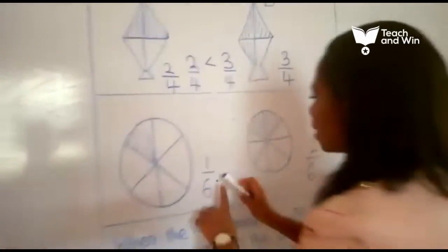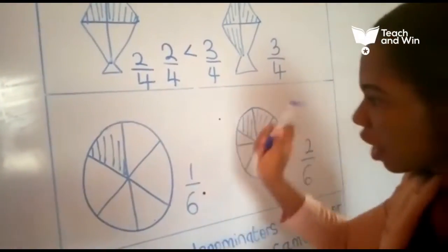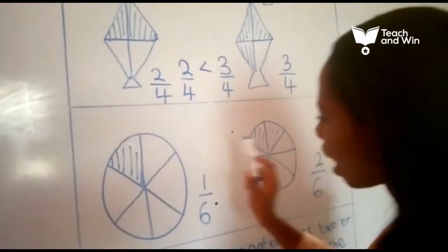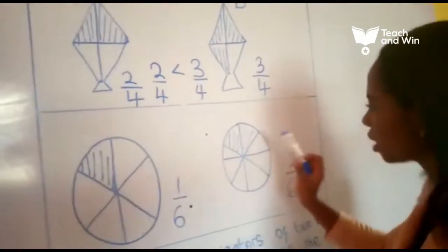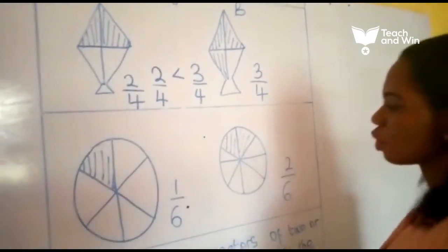The same thing applies here. Here, in this circle, A colored only one part of the circle. Hence, we have 1 over 6. The same thing here, B colored 2 over 6 of this circle.